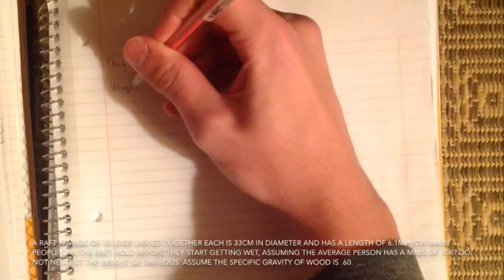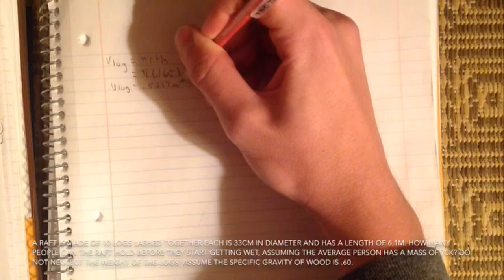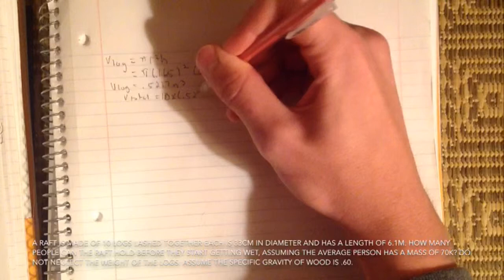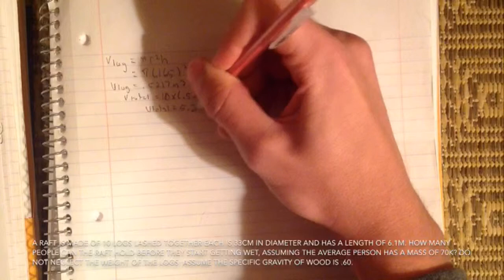First we are going to find the volume of the log. To find that we are finding the volume of a cylinder which is pi r squared h. We multiply pi by 0.165 which is the radius, square that, and then multiply it by 6.1. We get our answer of 0.5217 meters cubed, and then to find the total of all 10 logs we multiply it by 10. The total volume of all 10 logs is 5.217 meters cubed.